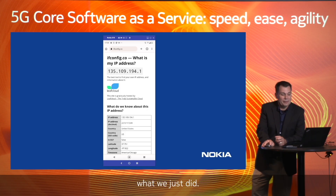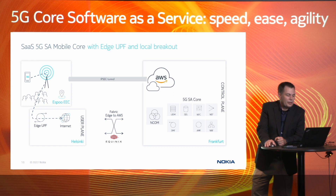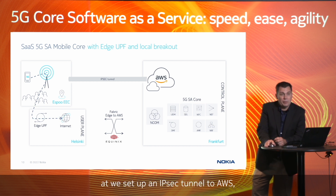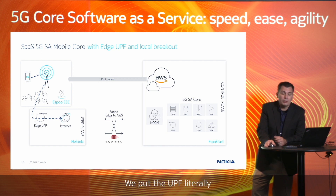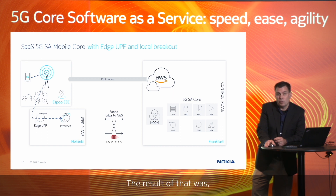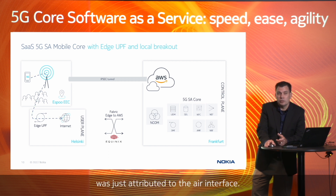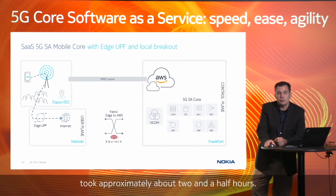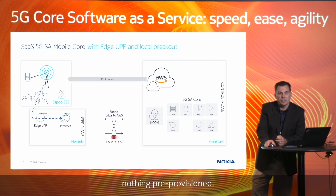So let's summarize what we just did. From the EEC, where I'm currently at, we set up an IPSec tunnel to AWS where we deployed an entire 5G core. We put the UPF literally right down the street on the edge, which allowed us to do local breakout. The result was ping times of 14 milliseconds, and we know 12 milliseconds was attributed to the air interface. All of this deployment took approximately two and a half hours — and remember, our starting point was that there was absolutely nothing pre-provisioned. So thank you for your attention.